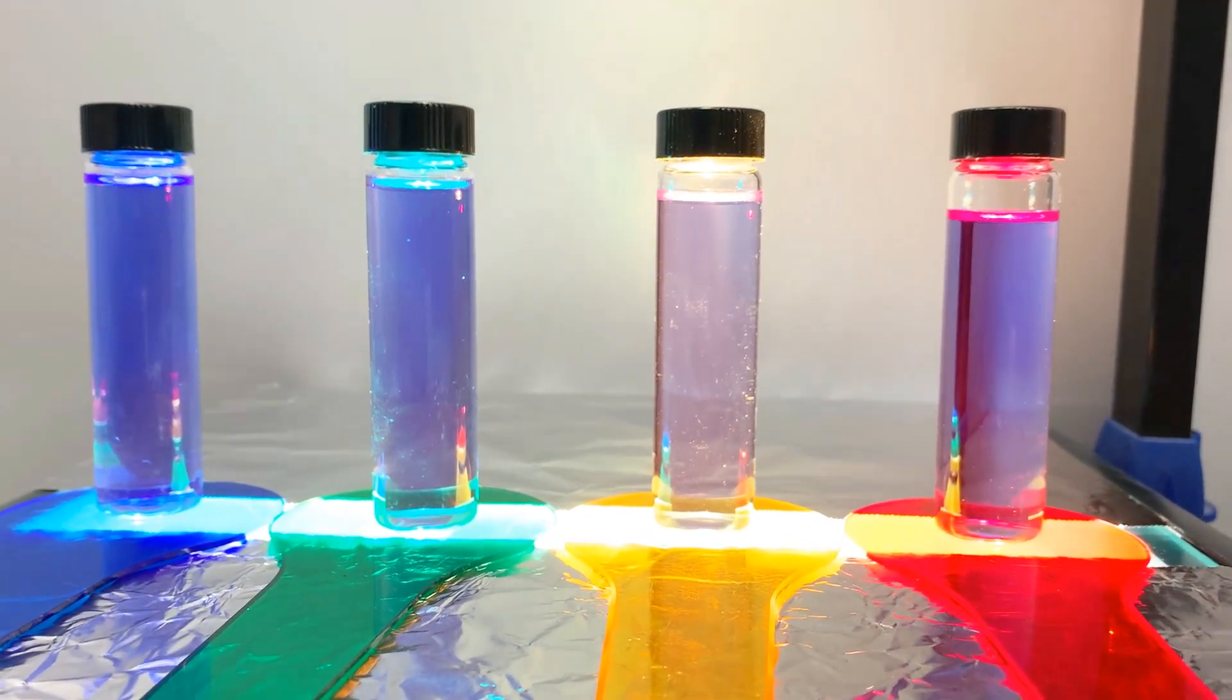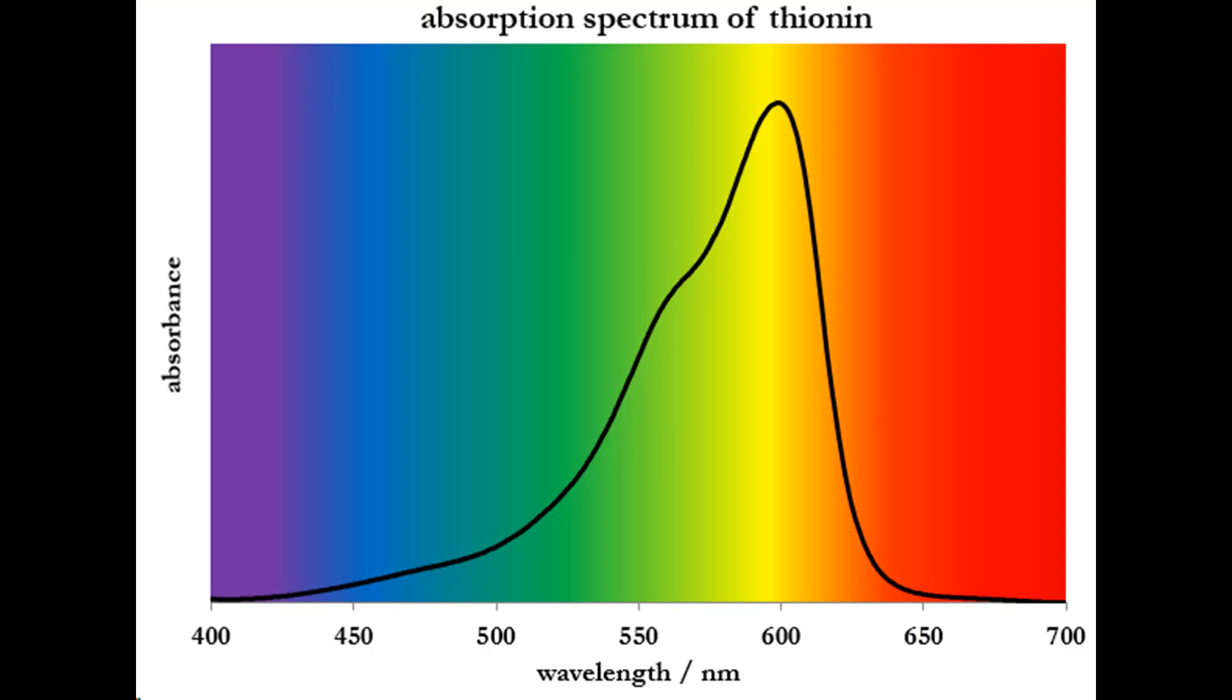This result makes a lot of sense if we look at the absorption spectrum of thionine. The absorption spectrum of thionine tells us what colors of light thionine absorbs the best. Notice that the peak of this spectrum matches up with yellow light.